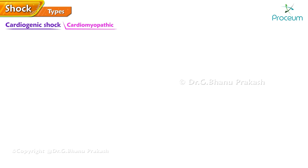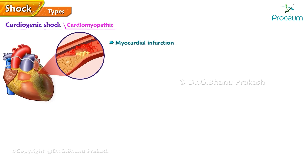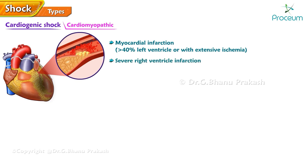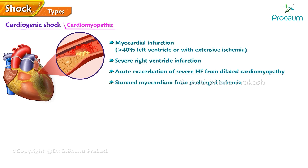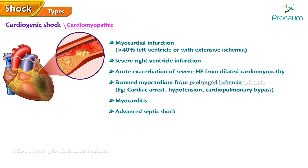Cardiomyopathic causes of cardiogenic shock include: myocardial infarction involving more than 40% of the left ventricle or with extensive ischemia; severe right ventricular infarction; acute exacerbation of severe heart failure from dilated cardiomyopathy; stunned myocardium from prolonged ischemia such as cardiac arrest, hypotension, or cardiopulmonary bypass; myocarditis; advanced septic shock; myocardial contusion; and drug-induced causes such as beta blockers.